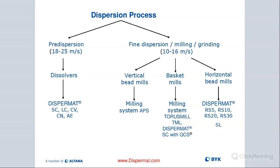Anything less than 18 to 25 meters per second may give you the same results, but it will take much longer — or in some instances you may never get there. We have different types of systems: the SC for production, a budgetary model the LC, a nice small unit for the lab called the CV with different safety functions. The CN and AE are higher-end models with upscaling capabilities and data storage. For milling, we have different types of vertical bead mills, basket mills, and horizontal bead mills for lab as well as production.